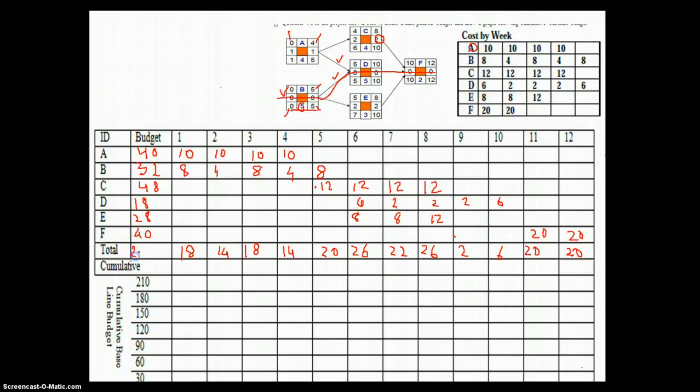So we can see the total budget for this entire project is 206. And now we could do the cumulative value, which would be 18. And then 18 add 14. And that would be 28, 32.